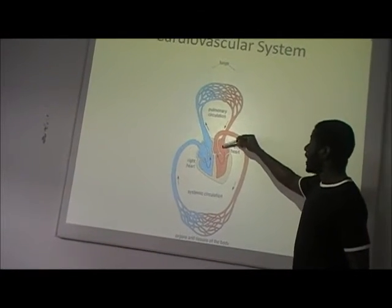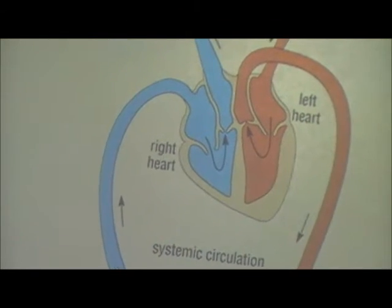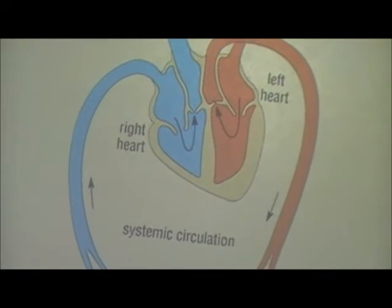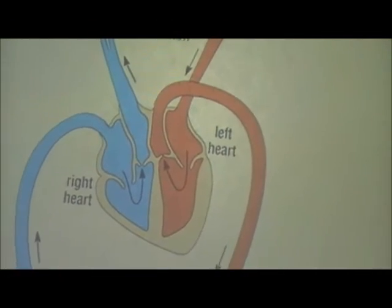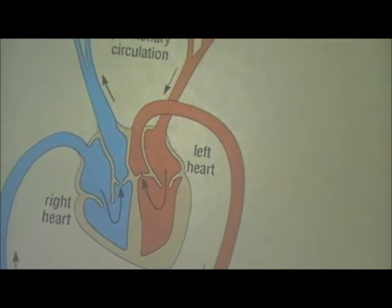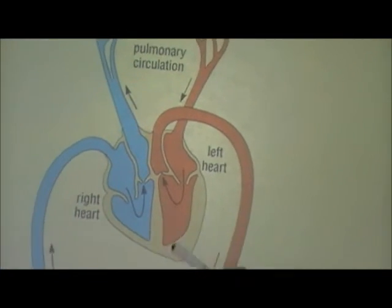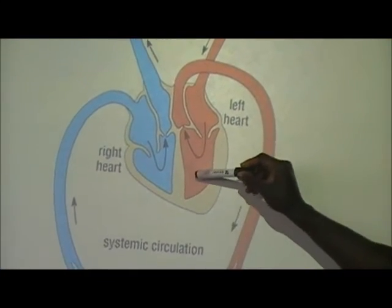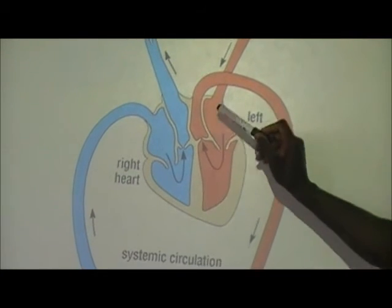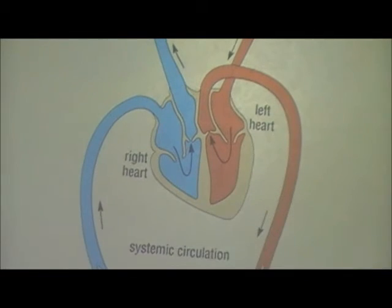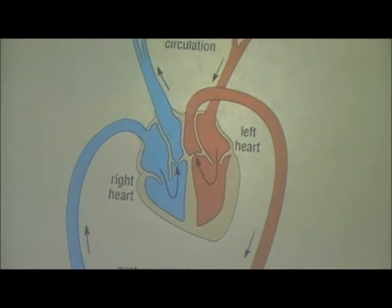The pulmonary vein delivers the blood to the left atrium. Once the blood is delivered to the left atrium, the atria contract again and the blood is channeled into the left ventricle. The valve that prevents backflow of blood to the left atrium is called the bicuspid valve — also referred to in some literature as the mitral valve; they are the same thing. When the ventricles contract, the oxygenated blood from the left ventricle gets channeled into the aorta through the aortic valve. The aortic valve and the pulmonary valve together are known as the semi-lunar valves — 'lunar' relating to the moon, 'semi' meaning half-moon.